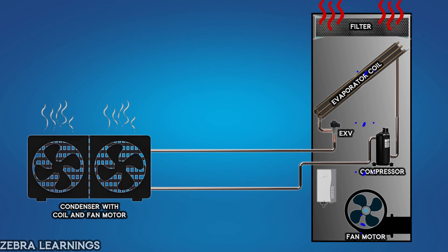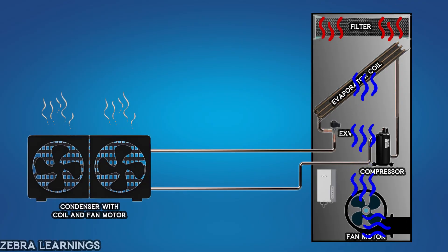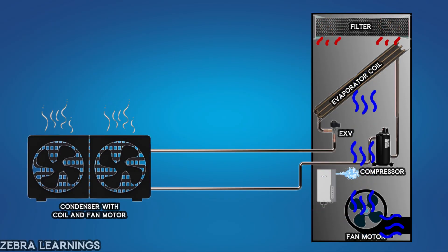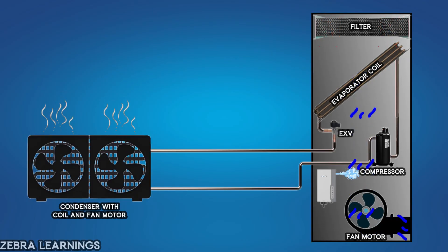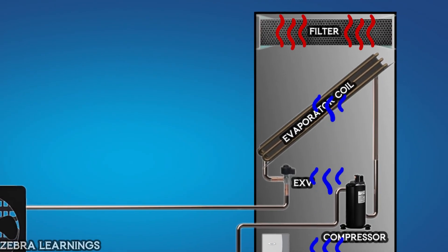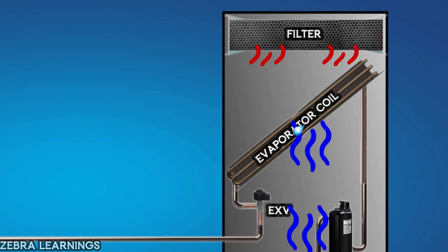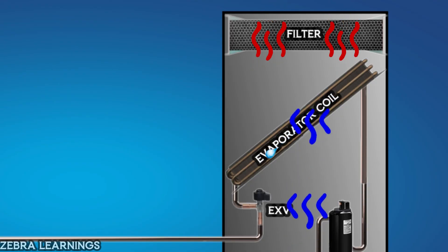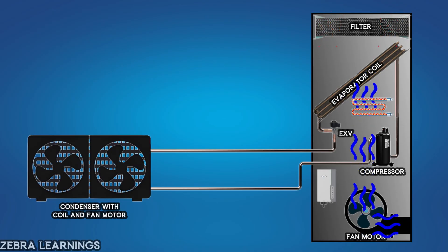To maintain the desired humidity level in a data center, PACs employ various mechanisms to adjust the moisture content of the air. When the humidity level drops below the desired range, the humidifier generates water vapor, which is then mixed with the air stream and distributed through the supply duct, increasing the humidity level and bringing it back to the target range. Conversely, when the humidity level exceeds the desired range, the evaporator coil — responsible for cooling the air — also plays a role in dehumidification. As the air passes over the cold coil, its temperature drops, causing water vapor to condense and form water droplets, which are then removed from the air stream, effectively reducing the humidity level. In some PAC units, additional components like heaters or dehumidifiers may be employed to further refine humidity control.